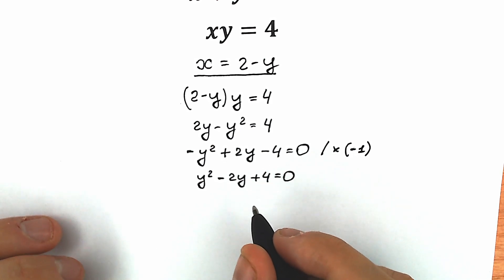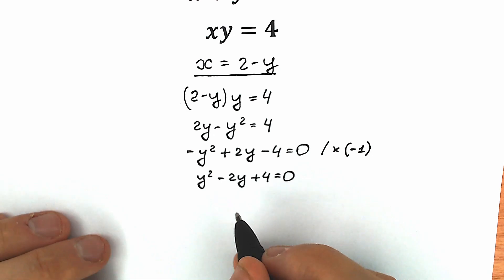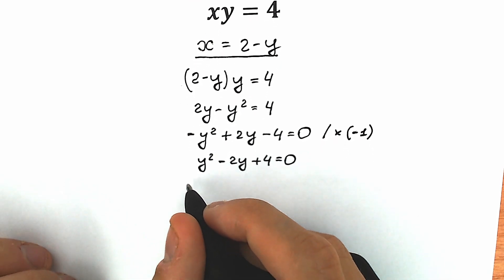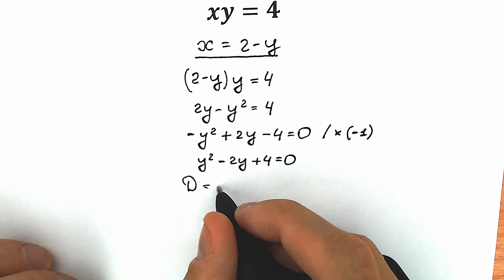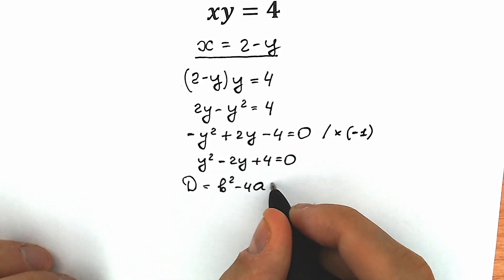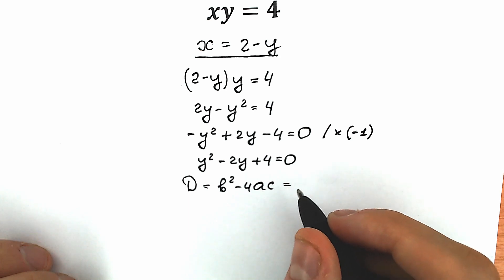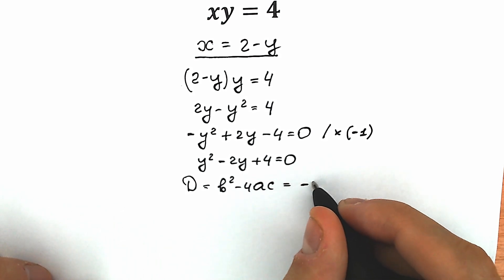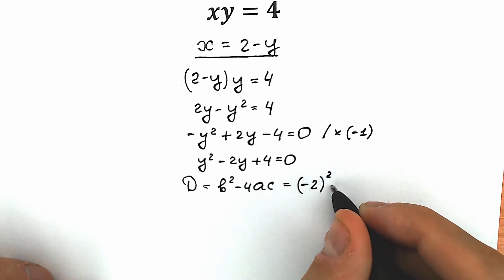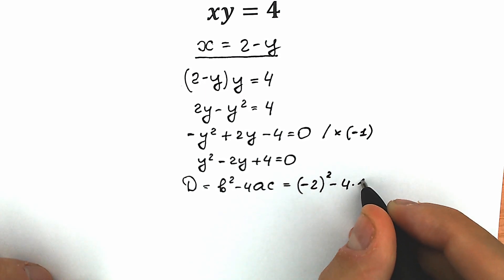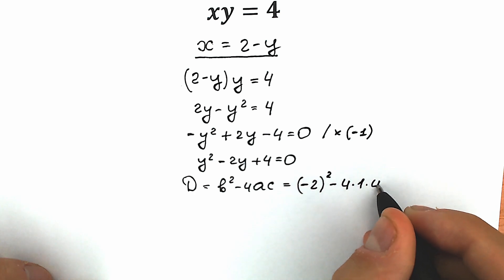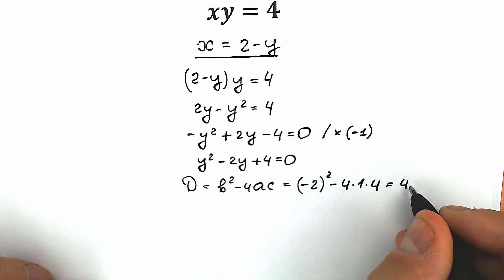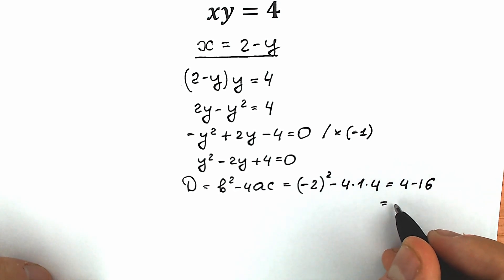This is a basic quadratic equation, nothing hard. Let's start by finding the discriminant. The discriminant equals b squared minus 4ac. Plugging in: b is minus 2, so we have (minus 2) squared minus 4 times 1 times 4. As a result the discriminant equals 4 minus 16, which is equal to minus 12.